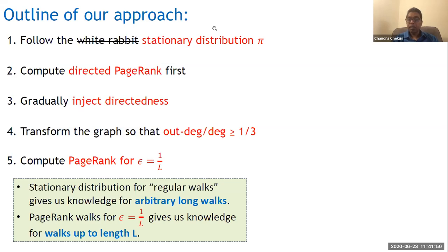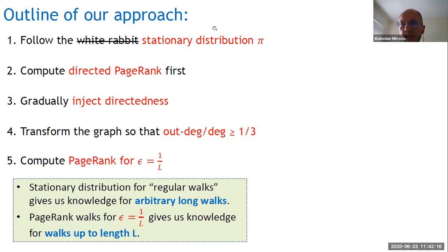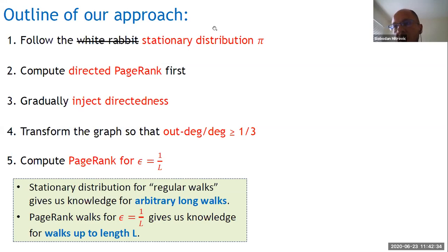Another question: do you have any results with memory dependence much less than L, say square root of L? Not really. Intuitively, in our approach we need dependence on L because even just the random bits needed per walk — if you have n walks, one per vertex — you need something like M times L many random bits. Our approach doesn't try to use randomness in a more efficient way, so we have a linear dependence on L.